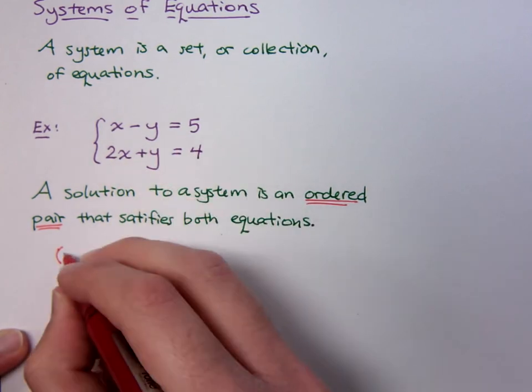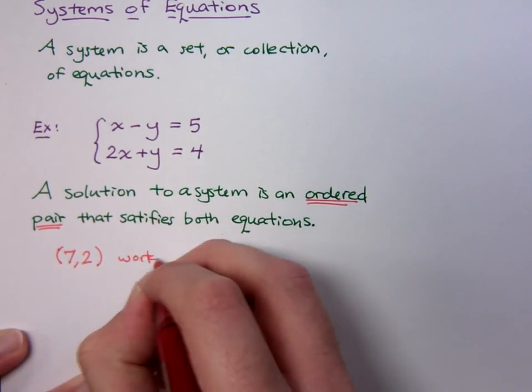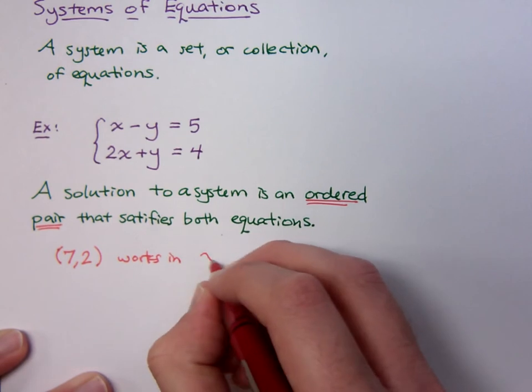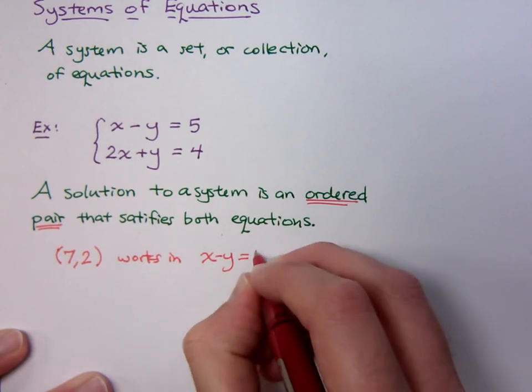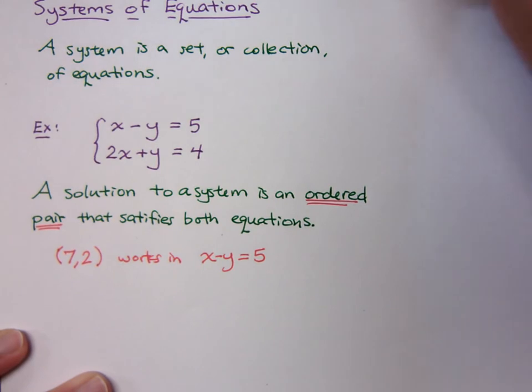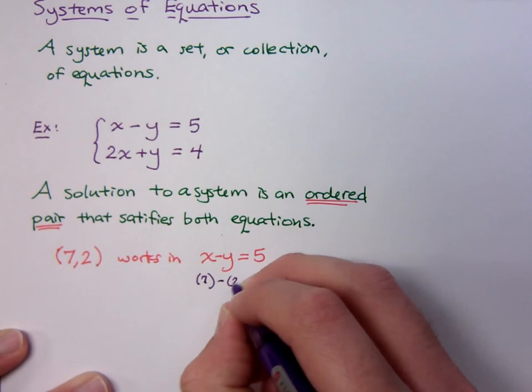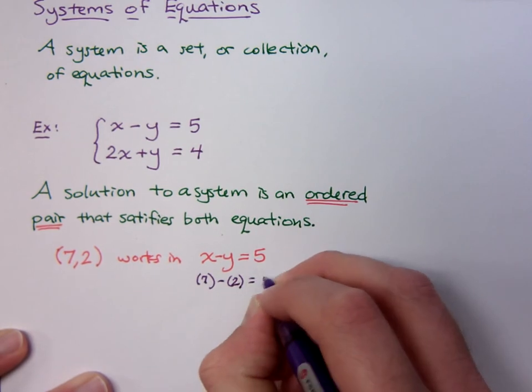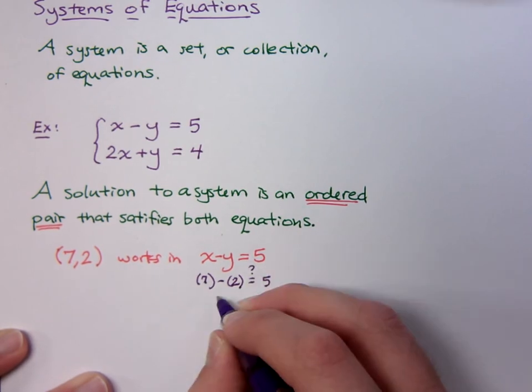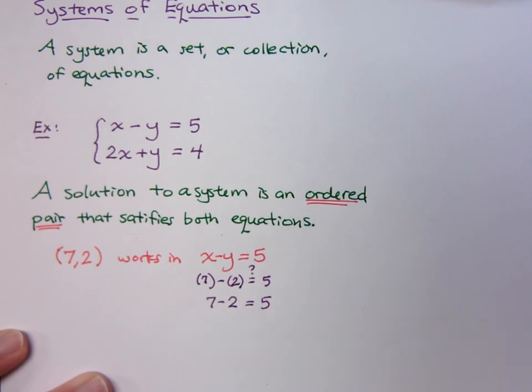we know that the ordered pair (7, 2) works in the equation x minus y equals 5. If you don't believe that, look what happens when you plug that in. If I replace the x with 7 and the y with 2, does that equal 5? Well, yeah, it's easy to see that 7 minus 2 equals 5.